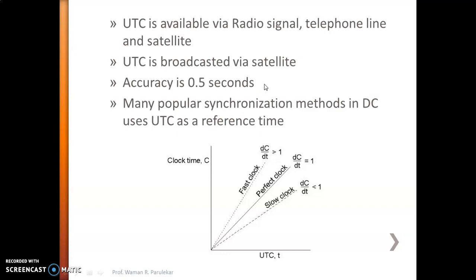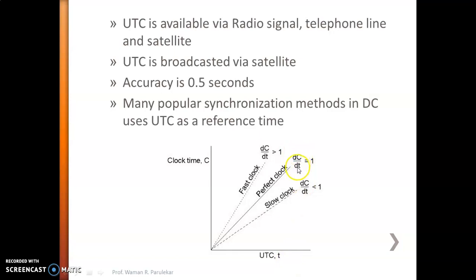Now, how can we identify whether our clock is properly synchronized with UTC or not? In a graph where C is clock time and T is UTC, if dC/dT equals 1, then the time is perfect — for example, your computer shows 5 PM and UTC is also 5 PM. If dC/dT is greater than 1, your clock is fast. If dC/dT is less than 1, your clock is slow. This is how you can identify whether our clock is perfect, fast, or slow.